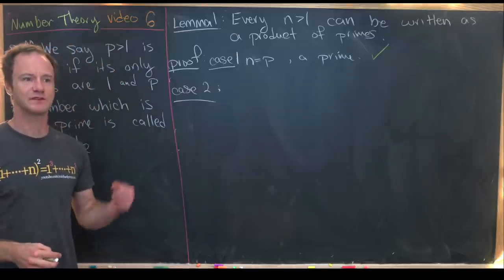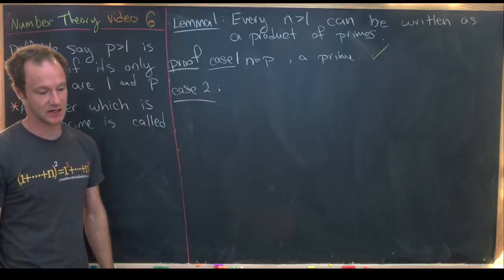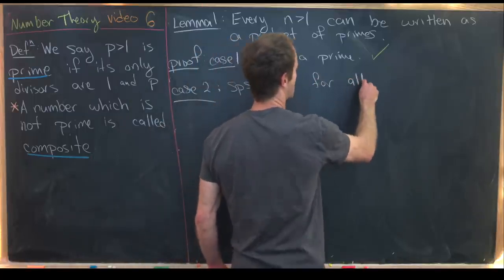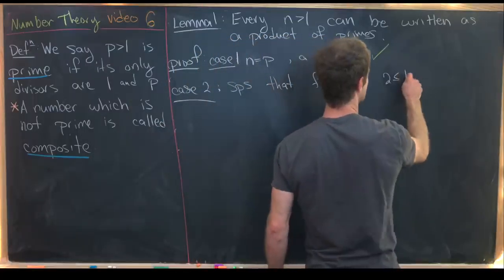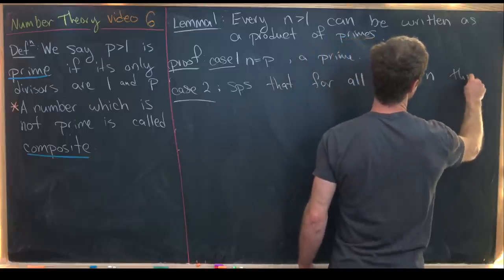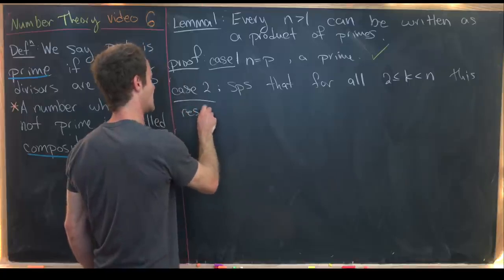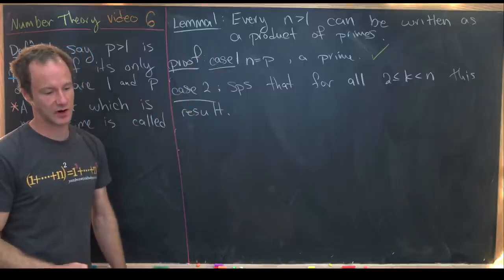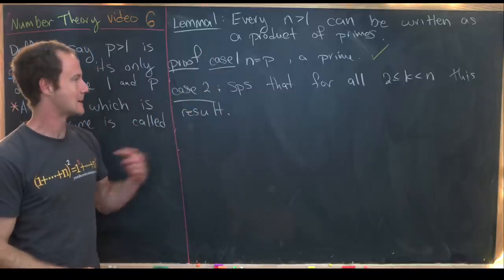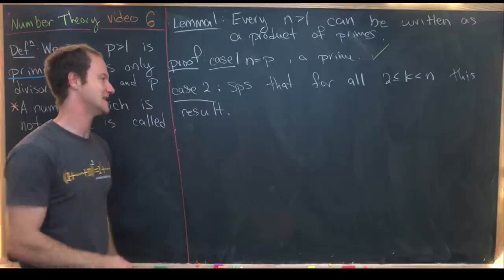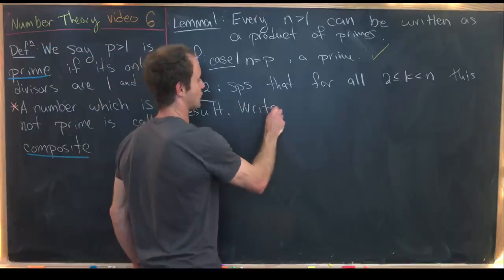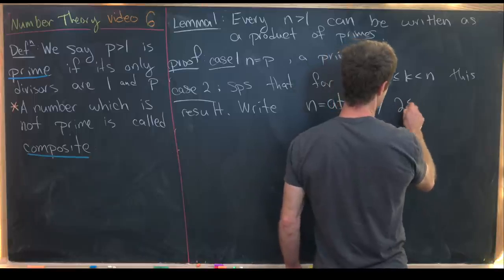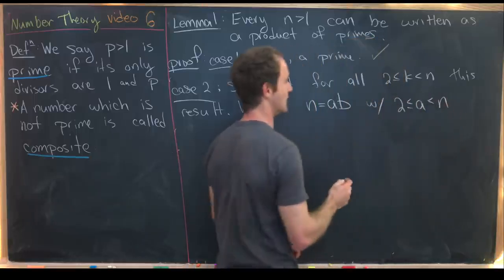When n is not prime, we'll proceed by induction. Suppose for all k between 2 and n this result holds — meaning all such k can be written as a product of primes. Since we're assuming n is composite, we can write n as a times b, where a and b lie strictly between 2 and n.